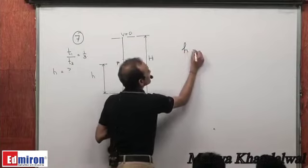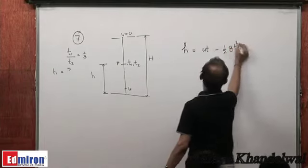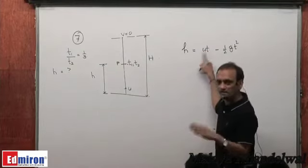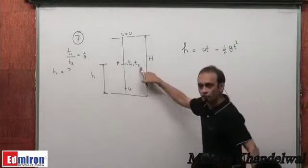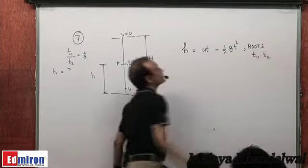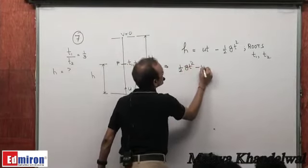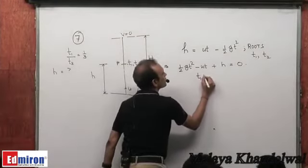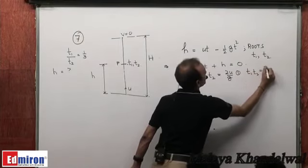Taking upward positive, at instant t when the particle is at height h: h = ut − ½gt². The roots of this quadratic in t are t₁ and t₂. Rearranging: ½gt² − ut + h = 0. By Vieta's formulas: t₁ + t₂ = 2u/g and t₁·t₂ = 2h/g.